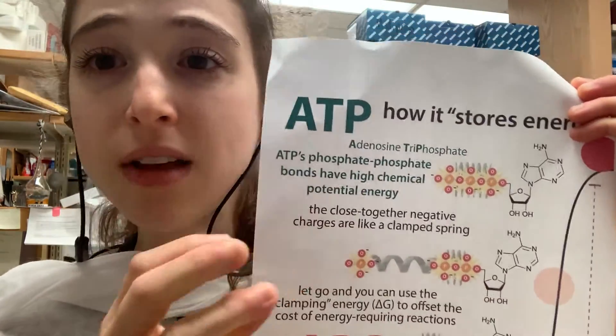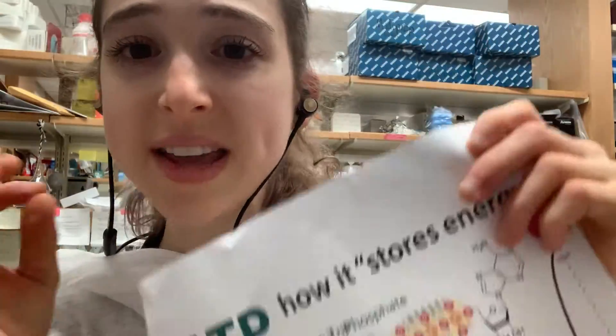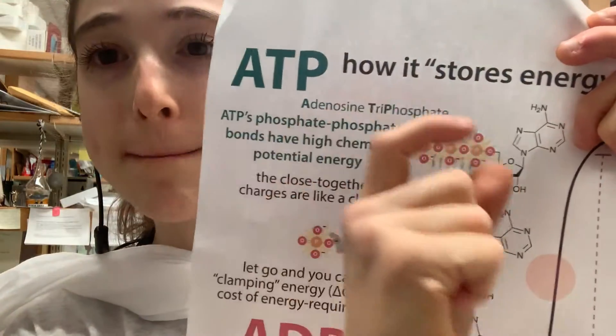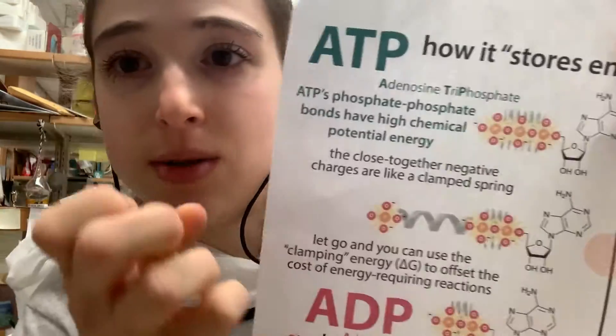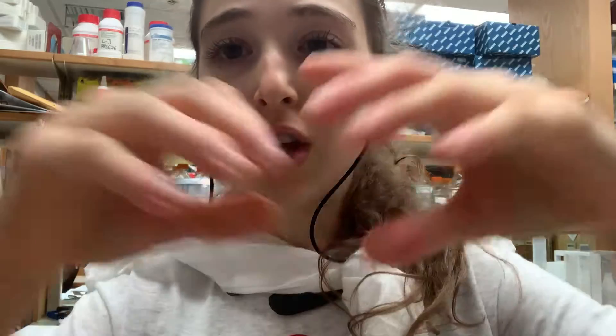Your cells spend energy in various ways in order to make those bonds. Those bonds really don't like to be held together because like charges repel. We call this a 'high energy bond' — the energy being used to hold it together — and then you can use that energy when you break that bond to do other things.